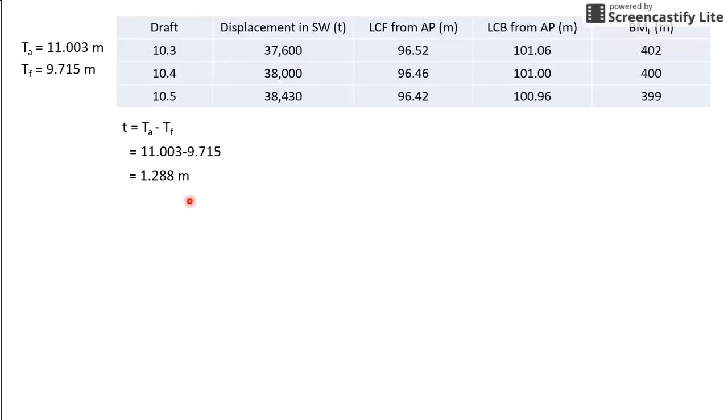The second step is to find your mean draft, which is (T_A + T_F) / 2. Substitute the values and you get 10.359 meters. You have to use interpolation to find your LCF at the draft of 10.359 meters because this draft is not given in the table.